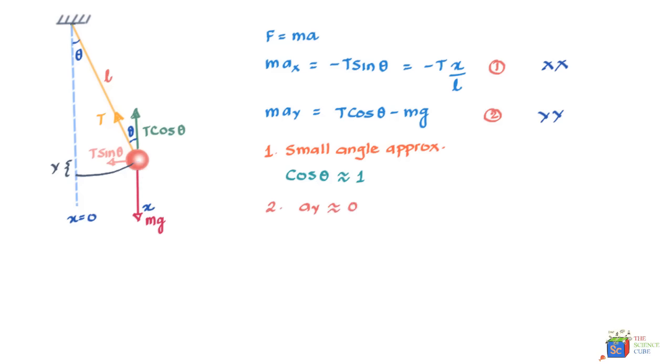The second assumption is that acceleration in the y direction is approximately equal to 0. If these are the two conditions, then equation 2 becomes this. Let's put on the left hand side, ay = 0. So the left hand side becomes 0, and this should equal T cos theta. We'll assume that cos theta is very close to 1, so the expression T cos theta becomes T only, and you have minus mg. Therefore, T = mg.